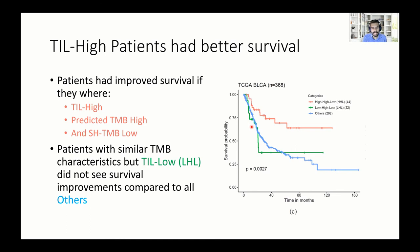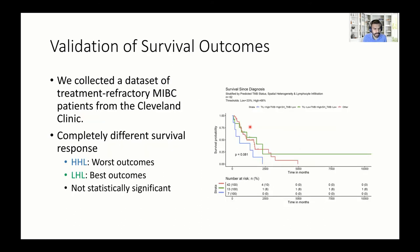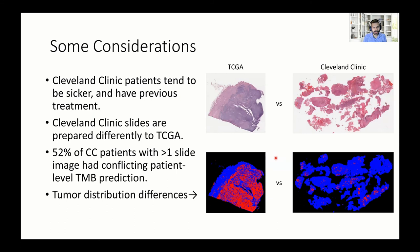We decided to validate these results on our Cleveland Clinic cohort and found that the response was different. The high TIL, high TMB, low heterogeneity group was actually the group performing the worst, though in a non-statistically significant manner. The Cleveland Clinic patients tend to be sicker and have had previous lines of treatment.